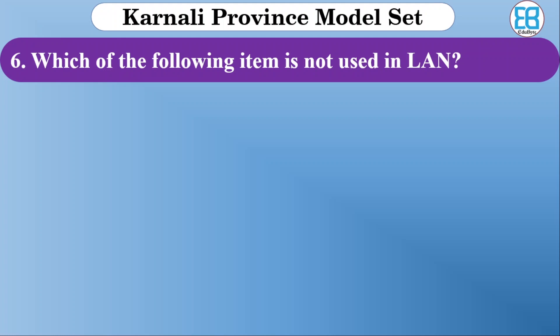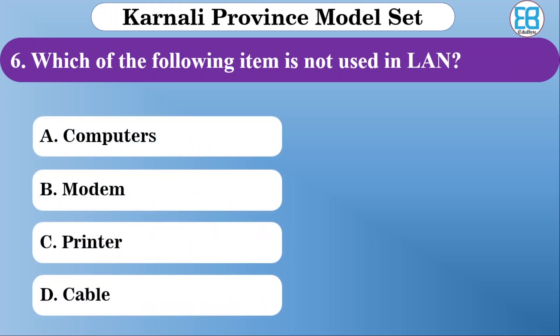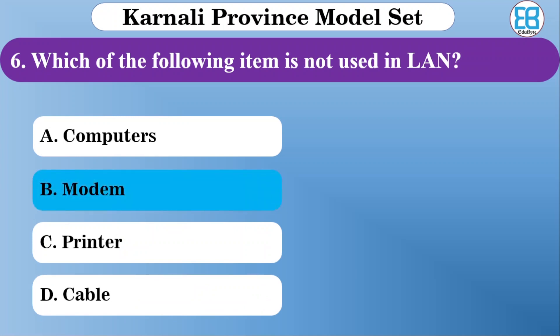The options are computers, modem, printer, and cable. The correct option is modem, because modem converts analog signal to digital signal. Analog signal does not work on a local area network. Modem is used through a network providing center — that is called a modem setup.